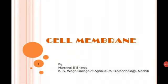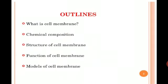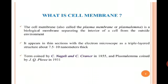Bismillahirrahmanirrahim and assalamu alaikum dear students. Our today's lesson is related to the cell membrane. After having information about the structure of the animal cell and the plant cell, we will now see what is the structure of the cell membrane, which is the outermost boundary of the animal cell, while in the plant and in some protists, bacteria, and fungi, it lies next to the cell wall. In this topic we will see the definition, chemical composition, structure, functions, and the model represented for the cell membrane.